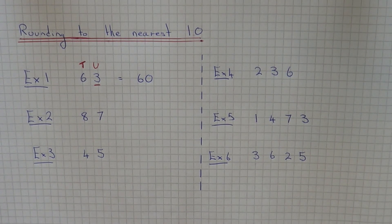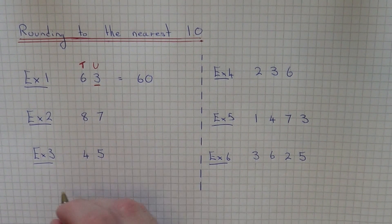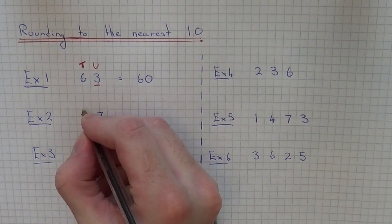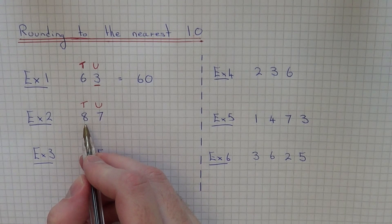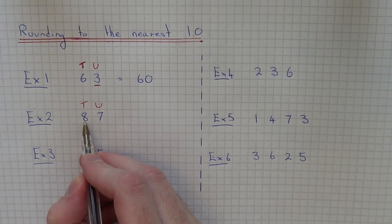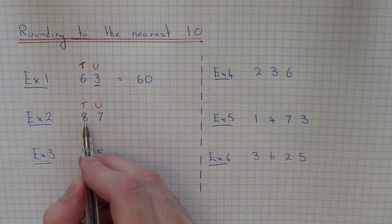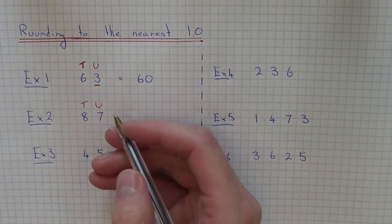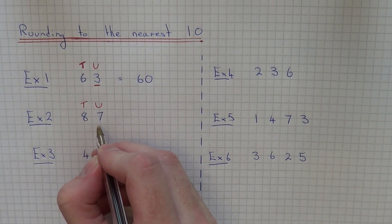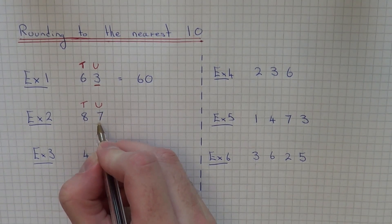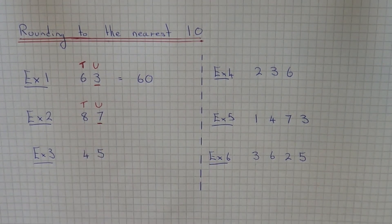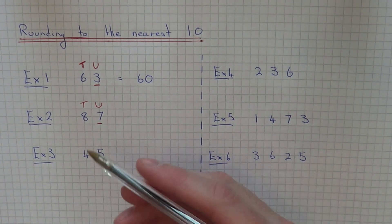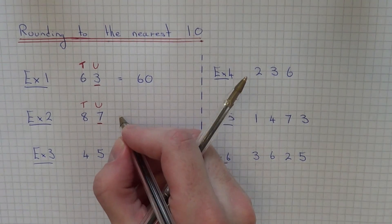Let's move on to example two. This time we have eighty-seven, and we need to round to the nearest ten. Look at how many tens you have — the tens column is here. We've got eight tens, so if we round the number down it will be eighty, if we round it up it will be ninety. Look at the number in the next column, which is a seven. That number is five or above, so we're going to round this number up to ninety.